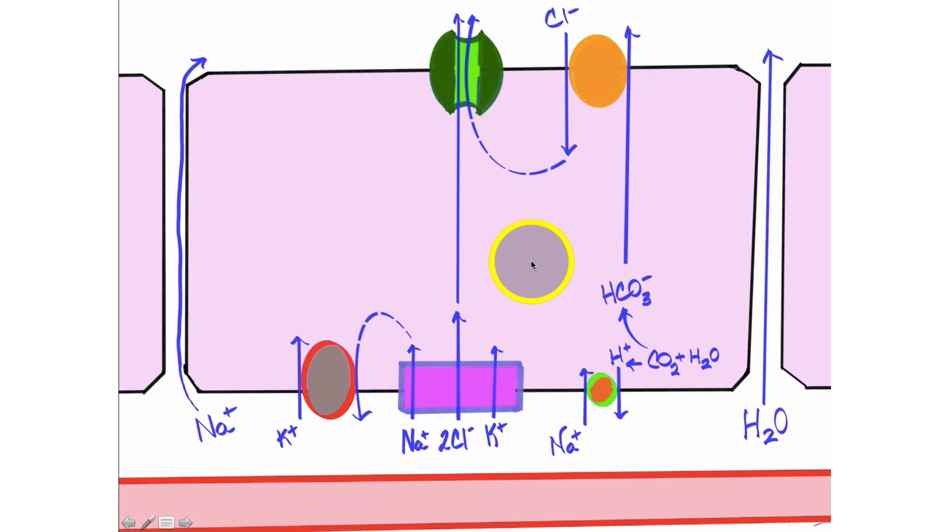So the absence of the CFTR channel is dramatically important. That is the production of the alkaline duodenum and the fluid mucus.